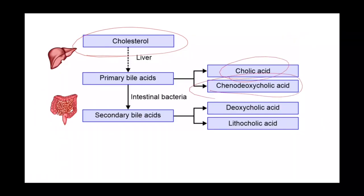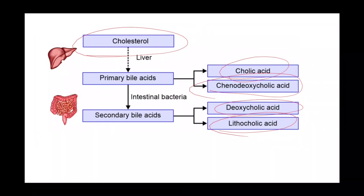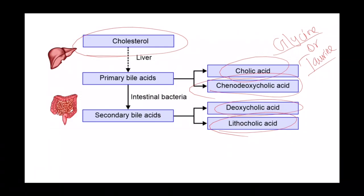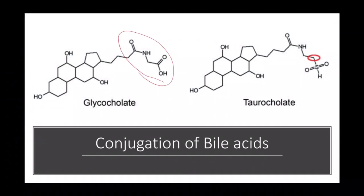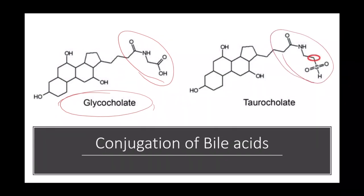Cholic acid and chenodeoxycholic acid are produced from cholesterol and are known as primary bile acids. Deoxycholic acid and lithocholic acid are produced from primary bile acids by the action of intestinal bacteria. Conjugation of glycine or taurine to bile acids leads to the production of bile salts.